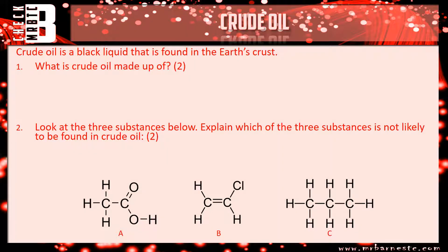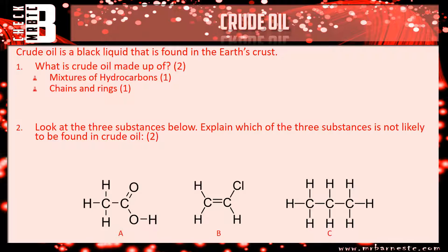Question one: what is crude oil made up of? Hopefully you remember from the video that it's a mixture of hydrocarbons — that's your main point. You can then talk about what those hydrocarbons are made up of: their length, and the fact that they exist as rings and chains. A third point you could have put is that crude oil contains impurities — specifically sulfur, which can cause acid rain — though we'll cover that in a later video.